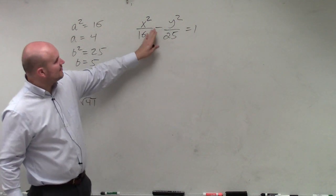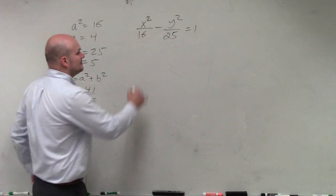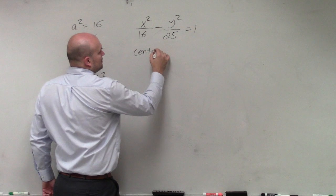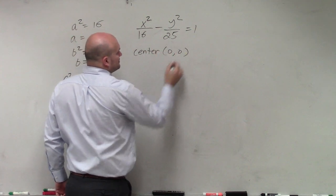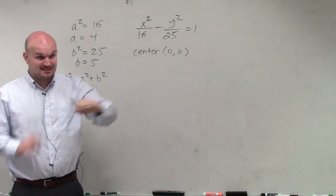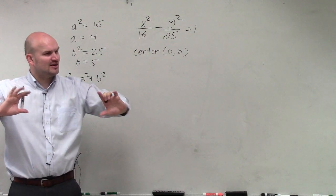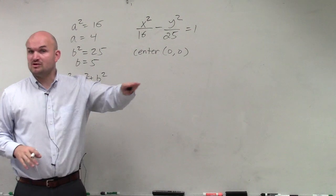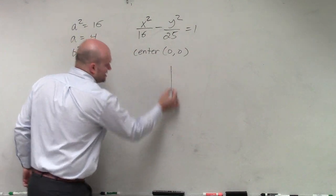Notice, guys, I'm not subtracting anything from my x and my y. So my center is going to be 0, 0, OK? Now, my a squared is under my x. So therefore, my transverse axis, which is the same thing as the minor axis, my transverse axis is horizontal. So what I'm going to do is sketch a graph.